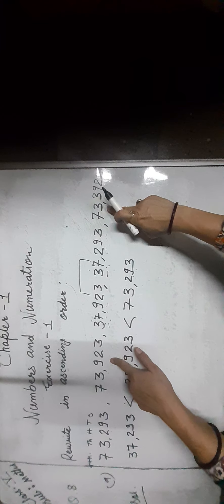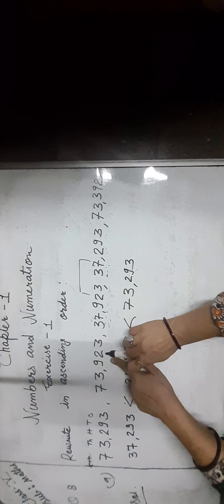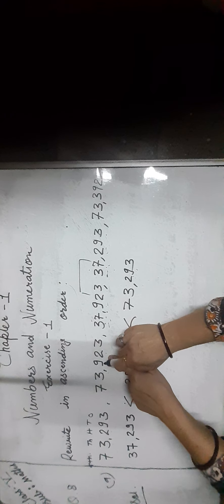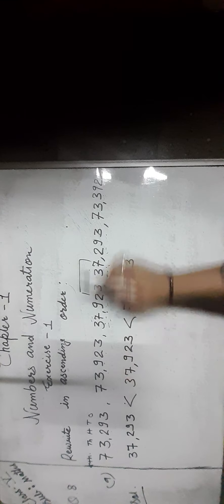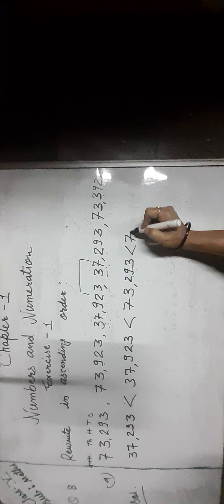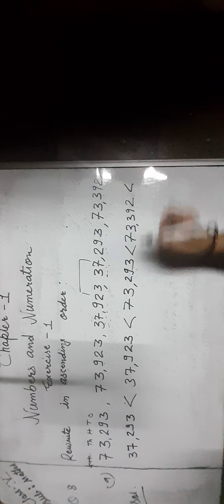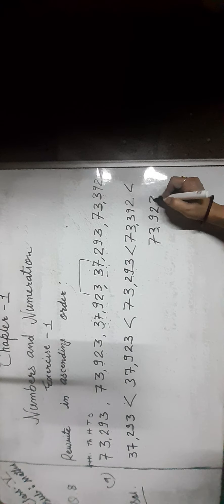Now compare the remaining numbers. Hundreds place digit is 9 and here is 3. Three is smaller than 9, so we write 73,392, then we write 73,923.